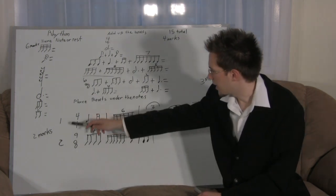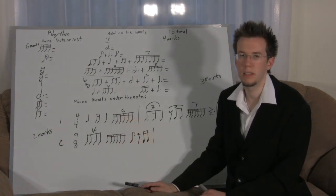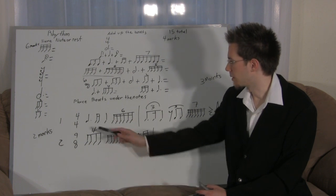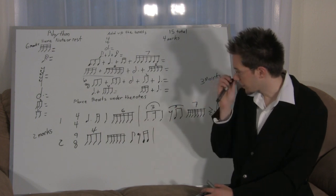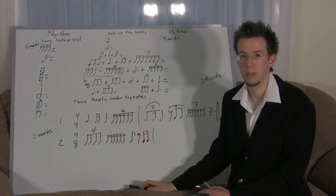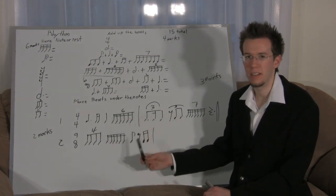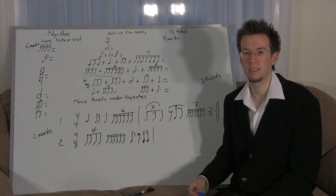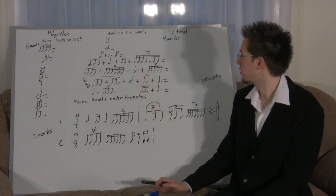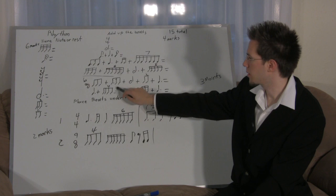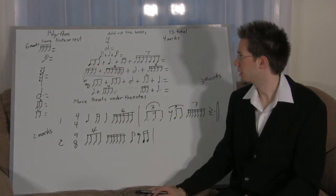The last part is 'place beats under the notes.' You're going to mark where beat one, two, three, four — or beats one through nine — fall. Each line is worth one mark, so if you mess up anything on either line, that mark is gone. The total for the rhythm section is 15 marks: four marks in the first part, three marks for the add-up section, six marks for placing beats, and two marks elsewhere.